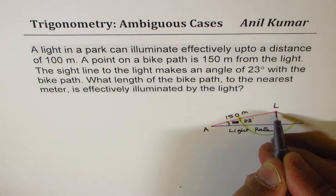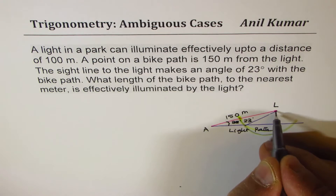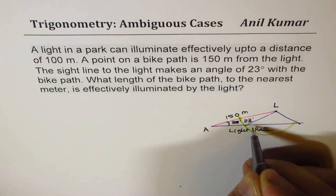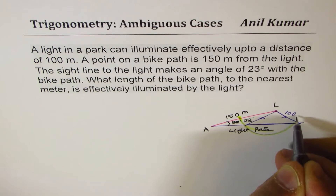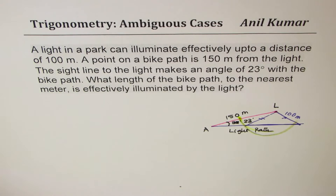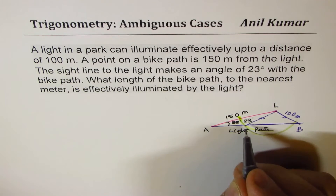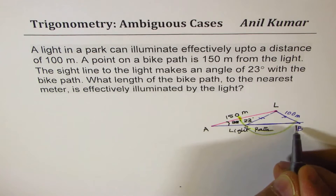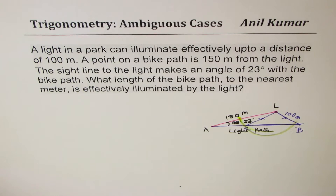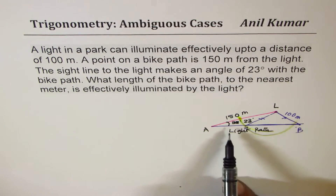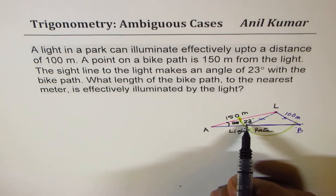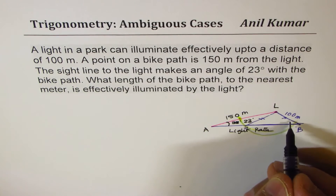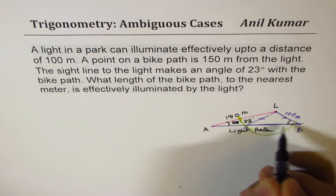So we are looking for a portion which is kind of like this — this is the portion which gets illuminated, where these two sides are 100 meters. What we need to figure out is what is this length BC, which is getting illuminated. I hope from this figure it's easier to solve the question. Since we know this angle is 23° and that side is 100, we can find angle B using sine law.